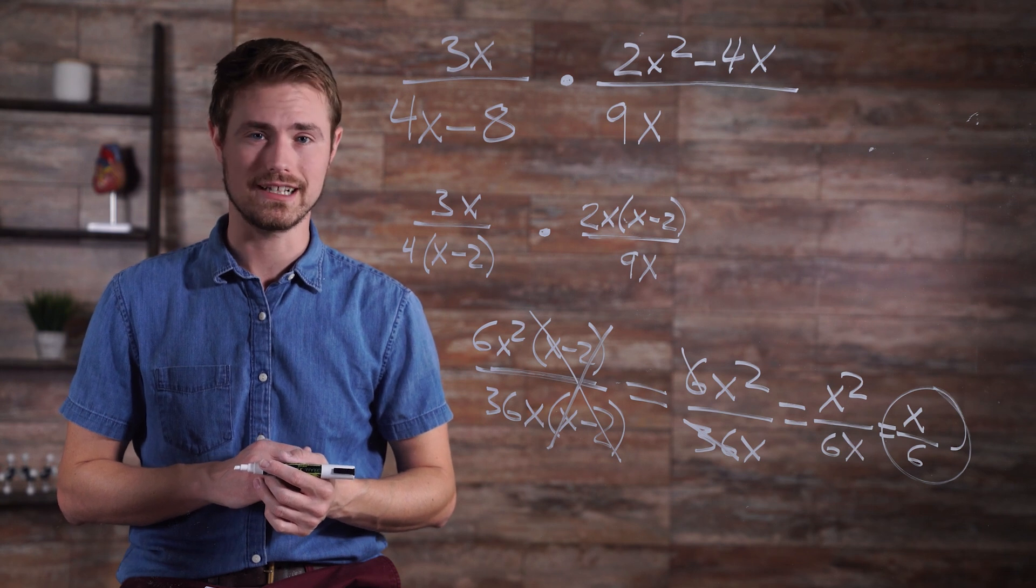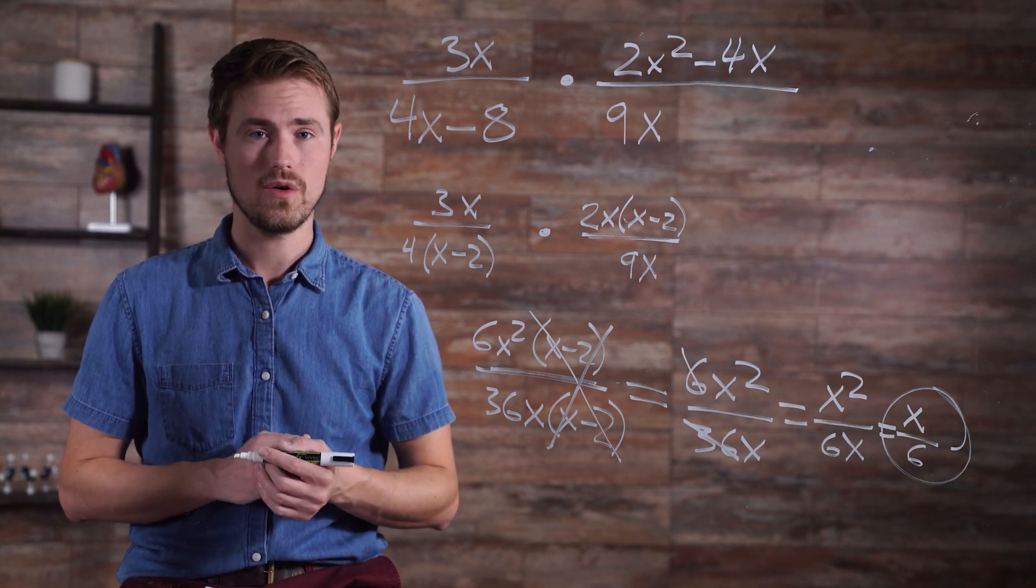Dividing rational expressions includes one extra step at the beginning of the process. When dividing by a fraction, it is the same as multiplying by the reciprocal of the second fraction. You can remember this rule as keep, change, and flip, which translates to keep the first fraction, change the operation to multiplication, and take the reciprocal, or flip, of the second fraction. Keep in mind that domain restrictions must be considered from both the numerator and denominator of the second fraction because of the flip in the division process.